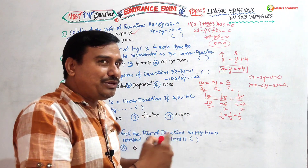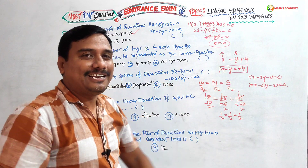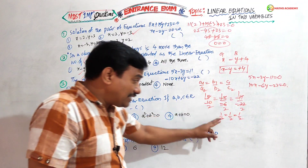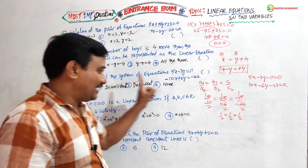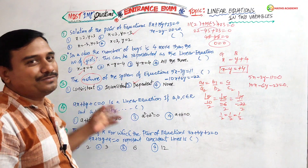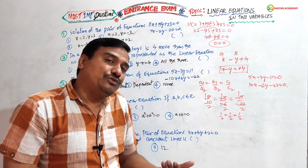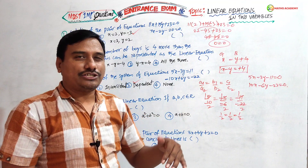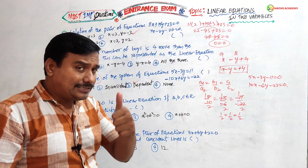If a₁/a₂ = b₁/b₂ = c₁/c₂, the answer is dependent and consistent. To summarize: if a₁/a₂ ≠ b₁/b₂ — consistent; if a₁/a₂ = b₁/b₂ ≠ c₁/c₂ — inconsistent; if all are equal — dependent. You see how easy it is.